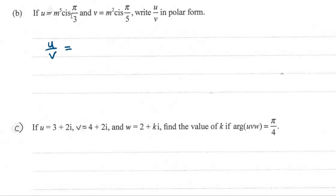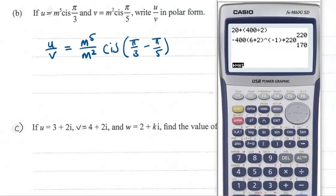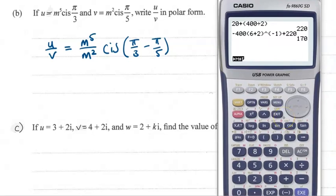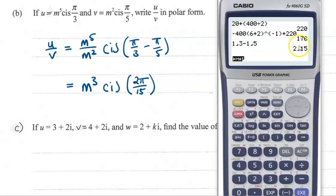We're working out u over v. In polar form, that means we take the modulus of each and divide it. So we've got m to the 5 over m squared, and the argument gets subtracted — pi by 3 minus pi by 5. If you're not very good with your fractions, just pop this up on the calculator, type it in as a fraction, and then add pi to it at the end. The m5 over m2 cancels to m3, cis 2 pi by 15.